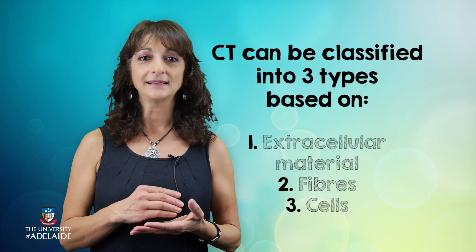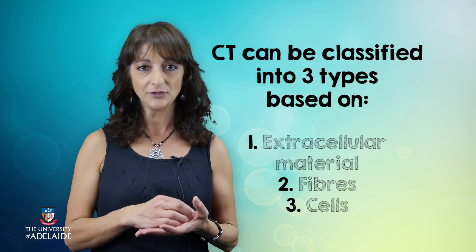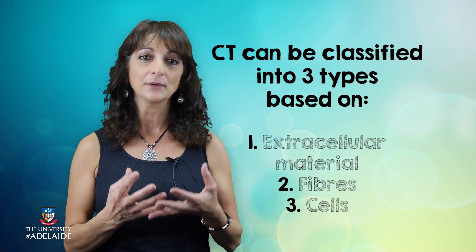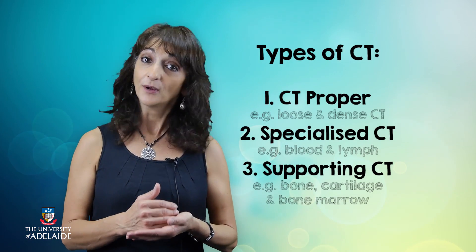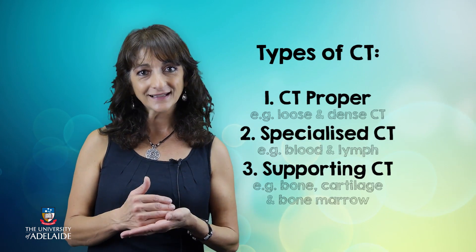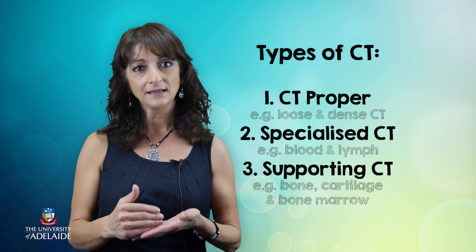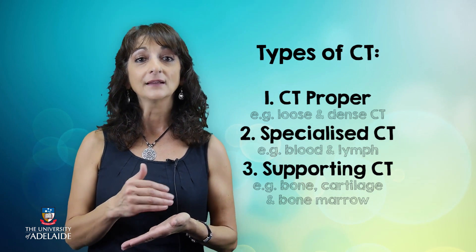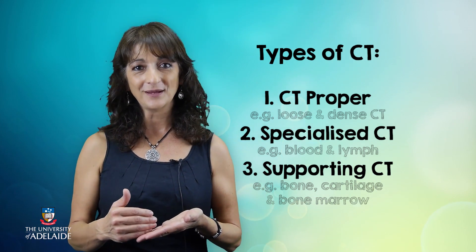Connective tissue has three main classifications depending on the nature of the extracellular material, as well as the fibres and the specialised cells embedded in it. These three classifications are: connective tissue proper, which includes loose connective tissue and dense connective tissue; specialised connective tissue types, which is fluid connective tissue — blood and lymph; and supporting connective tissue, which is bone, cartilage, and bone marrow.